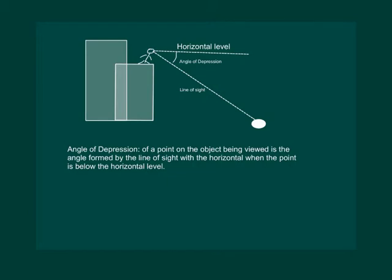In other words, the angle of depression of a point on the object being viewed is the angle formed by the line of sight with the horizontal when the point is below the horizontal level — that is the case when we lower our head to look at the point being viewed. In other words, when the object is viewed from a higher point, the angle formed with the horizontal is the angle of depression.